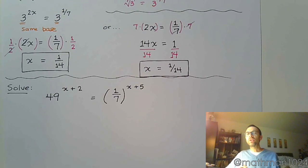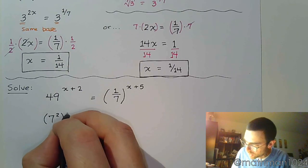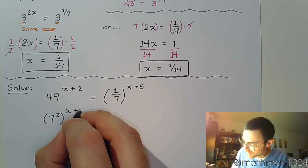Well, I hope that you can see that there is something going on between both sides of the equation that involves a 7, right? 49 can be written as a 7, and we can write this as 7 squared, and then still with that power, x plus 2.